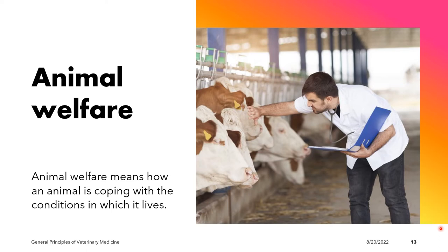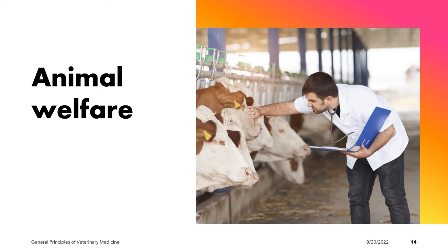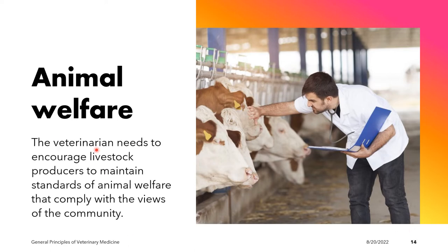Good animal welfare requires disease prevention and veterinary treatment, appropriate shelter, management, nutrition, humane handling, and humane slaughter. Therefore, the food producing veterinarian needs to encourage livestock producers to maintain standards of animal welfare that comply with the values of the community.